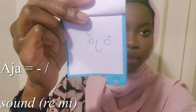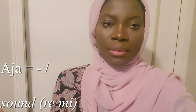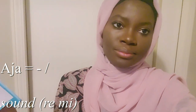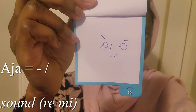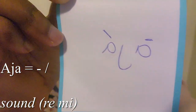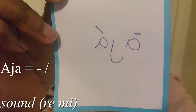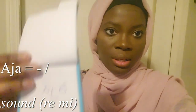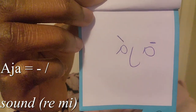Now, combining the symbols — if we have 'aja,' aja means dog in English. Aja will be Re-Mi — combining the sounds: Re then Mi. The first 'a' is Re, which is the dash, and you might not even write the dash if you want, but the other 'a' will have the Mi sound. So aja is Re-Mi.